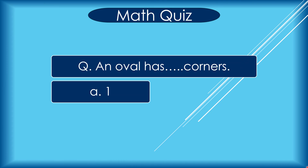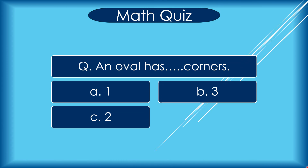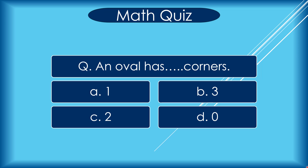An oval has how many corners? A 1, B 3, C 2, D 0. Correct answer is D 0.